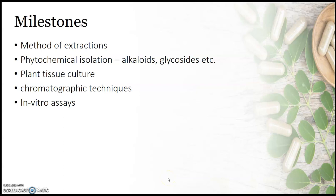After the 19th century, pharmacognosy changed a lot due to some milestones in the field. These milestones include the development of different methods of extraction of active chemical constituents from plants. Another milestone is phytochemical isolation — from 1860, chemists were able to isolate different kinds of chemicals present in plants, like alkaloids, glucosides, and more.